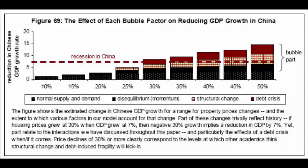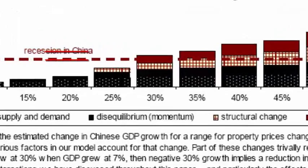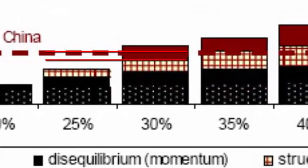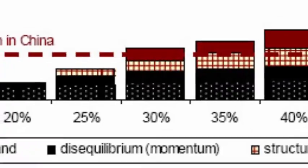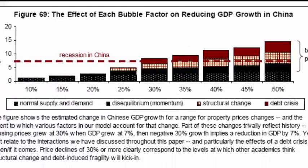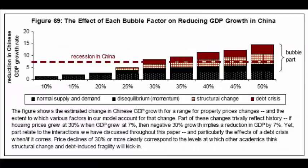What really tips the Chinese economy over the edge in this case is the effect it has on sovereign debt — both central debt and local level debt. We showed already that both those debt levels are dangerously high, particularly if they're accounted for correctly.